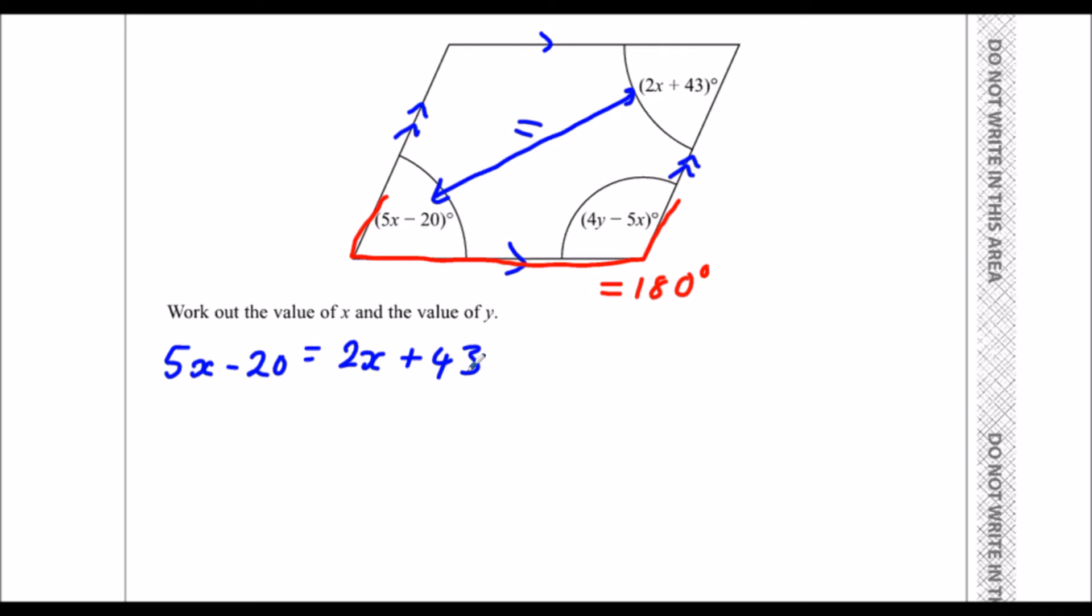We're going to solve the equation. The first step, we're going to get rid of the smallest x. I've got 5x's here, 2x's on the other side. If I take 2x from both sides, I'm going to get rid of the smallest x.